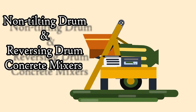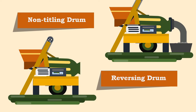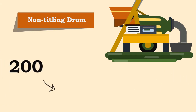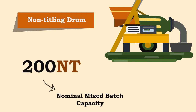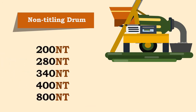Non-tilting drum and reversing drum concrete mixers are a similar type of machine with only a few differences. The non-tilting mixers are designated by a number which represents their nominal mix batch capacity in liters, followed by 'NT'. The standard sizes available in the market are 200NT, 280NT, 340NT.